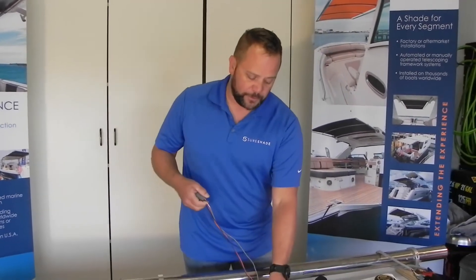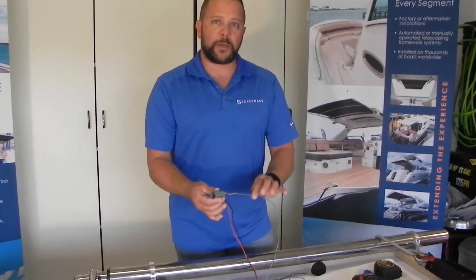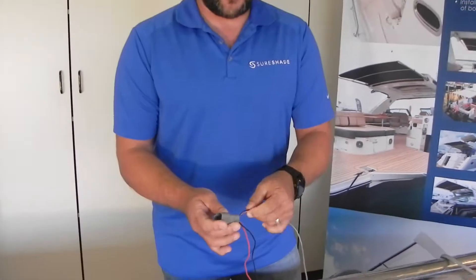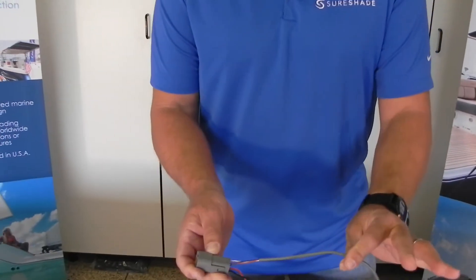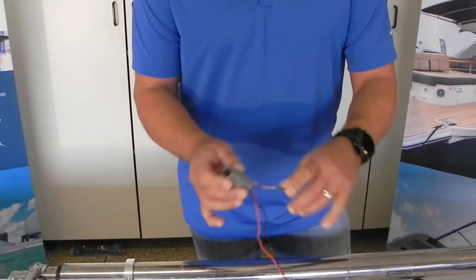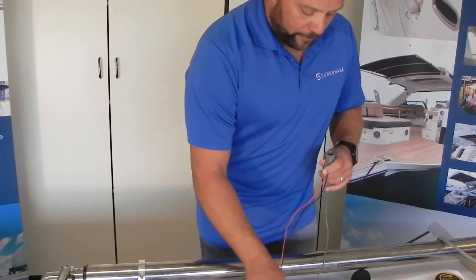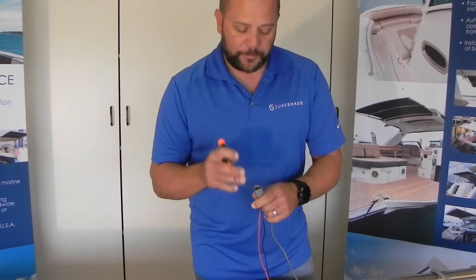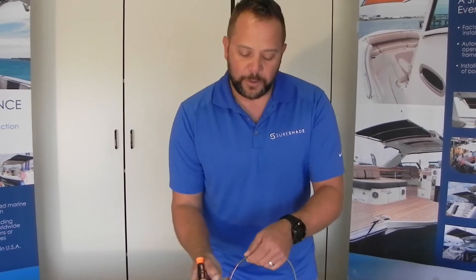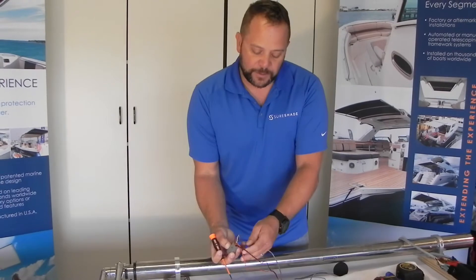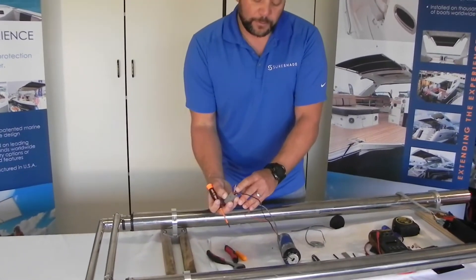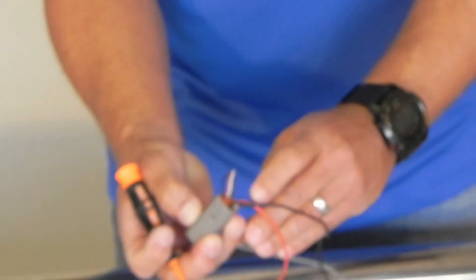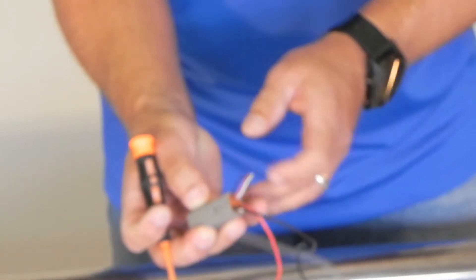The next step we're going to do is we're going to come to our Deutsch plug. The only three wires that we need to unpin are our wires to our sensor board, which are on our gray lead. So you're going to come in, you're going to remove your green cap that locks the pins in, and you're going to unpin all three of your wires. Please take note of your wire locations. White, red, black. So this way you put them all back the same way.